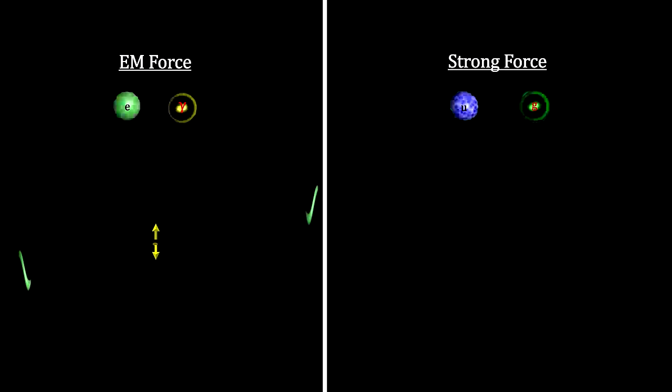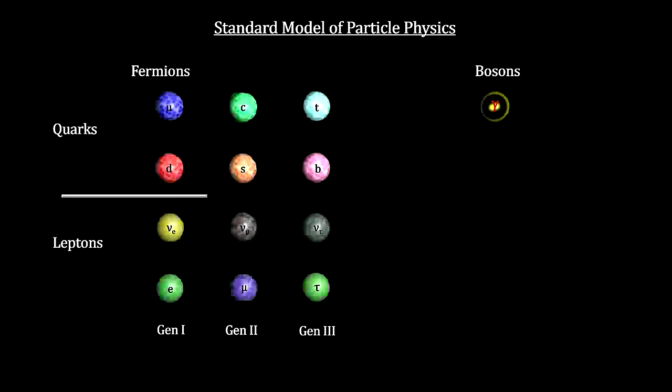And where interacting electrons disturb the electric field in a way that creates virtual photons that exert the force of the electromagnetic field, the EM force, interacting quarks disturb the gluon field in a way that creates virtual gluons that exert the force of the gluon field, the strong nuclear force. Note that the EM force can be attractive or repulsive depending on the charge, but the strong force is always attractive. So we can now add the gluon to our standard model of particle physics.